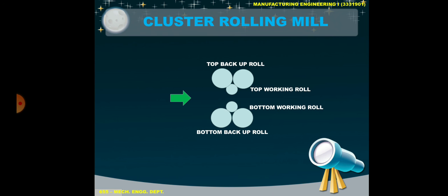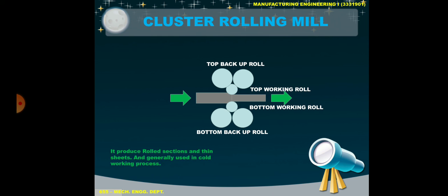Starting with the process: the workpiece is passed between the top working roller and bottom working roller, reducing its thickness. It is generally processed on a cold workpiece, so it is also called a cold rolling mill. It produces rolled sections and thin sheets of aluminium, copper, etc.